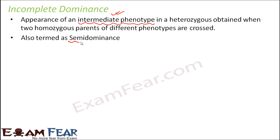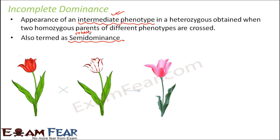Incomplete dominance is also known as semi-dominant. Semi means half, so it means dominance only to some extent, not fully. What was observed was that when a red flower was crossed with a white flower, what we got was a pink flower. This pink flower was an intermediate phenotype — it doesn't resemble any of its parents exactly, but it is formed due to blending of the red and the white color.